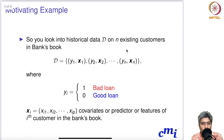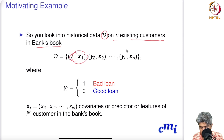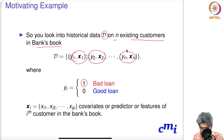You look into the historical data D of existing customers in the bank's book: (y1, x1) is information about the first customer, (y2, x2) the second, and (yn, xn) the nth customer. Here yi = 1 means it was a bad loan — the loan was given and the customer did not return the money with interest on time. yi = 0 means it's a good loan — the customer returned the money with interest on time.